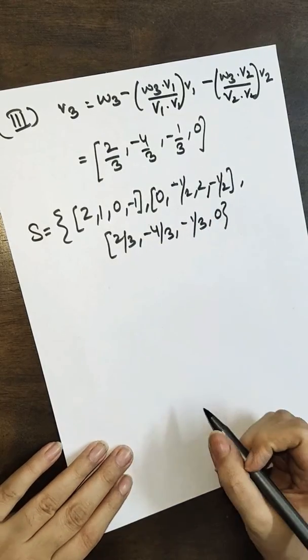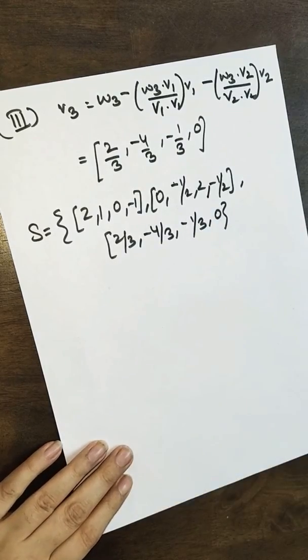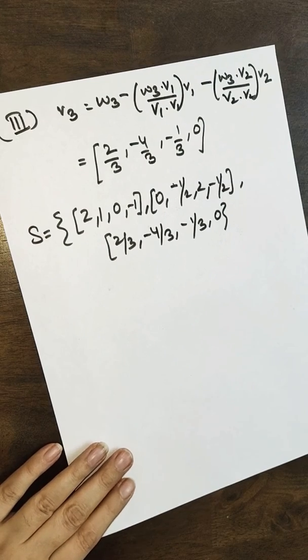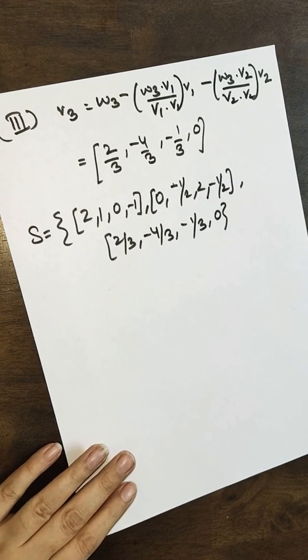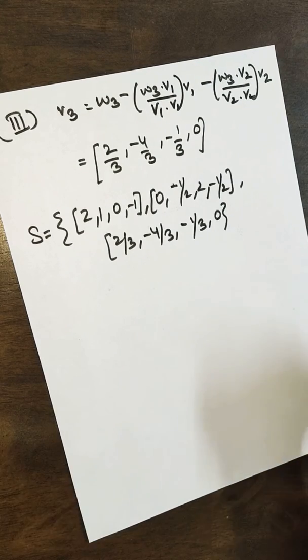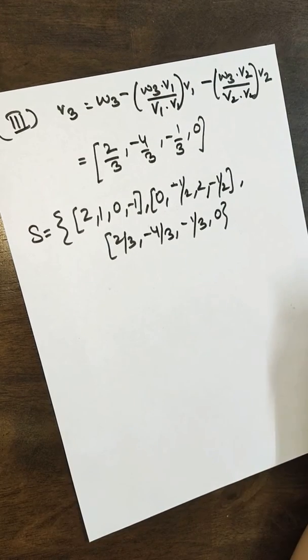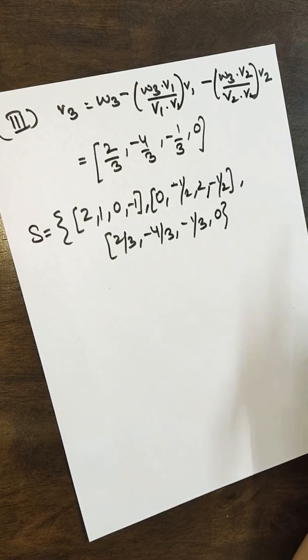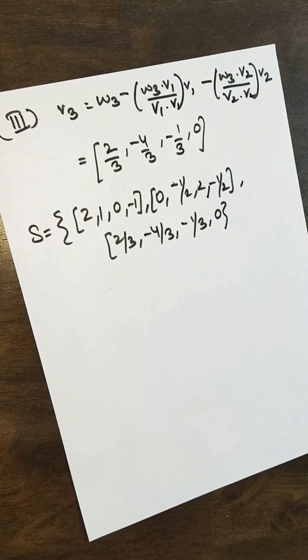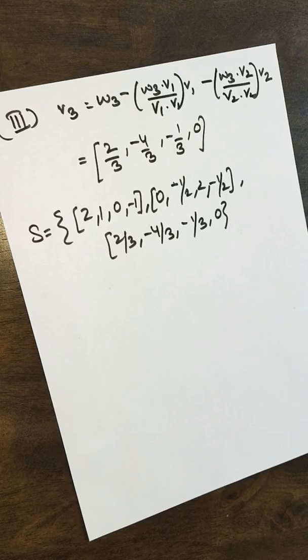So {v1, v2, v3} = {(2,1,0,-1), (0,-1/2,2,-1/2), (2/3,-4/3,-1/3,0)} is our orthogonal basis for W. This is how we apply the Gram-Schmidt process. I hope the process is clear to you. If you have any difficulties, please feel free to comment below. Thank you.